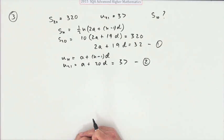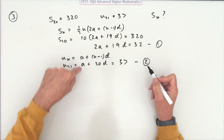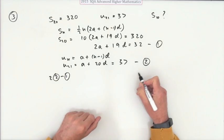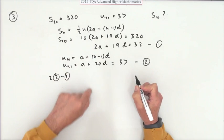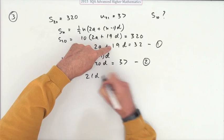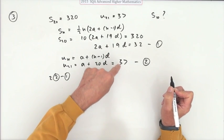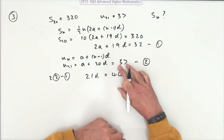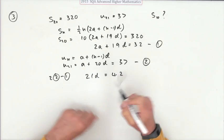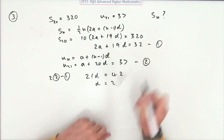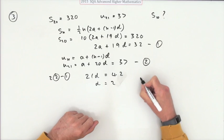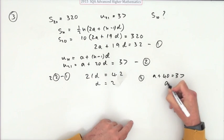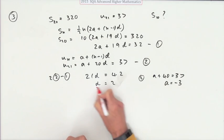So you take these two together. And if I double this and take away that, if I do 2 times 2 minus 1, I'll have this. 2 times a take away 2a, it'll disappear. 2 times that's 40, take away 19 is 21d. 2 times that is 74, take away 32 is 42. That was very handy. So d is 2, divide over, that's a nice wee number. And then put it back into equation 2. So in 2, we've got a plus 40 equals 37. So a is actually negative 3.